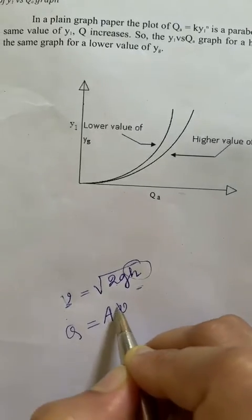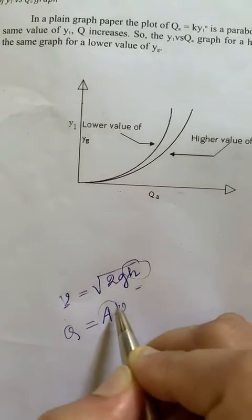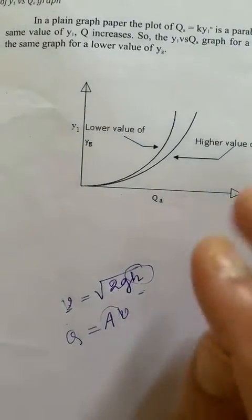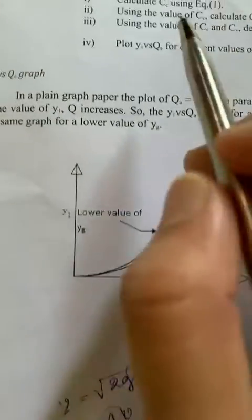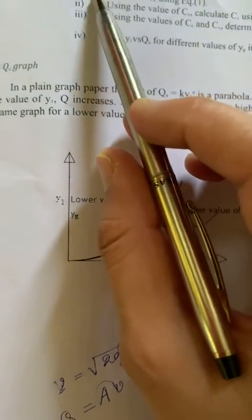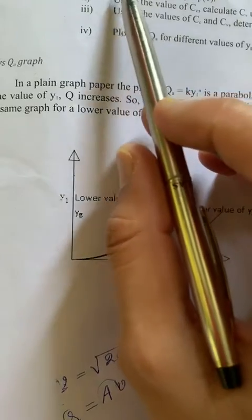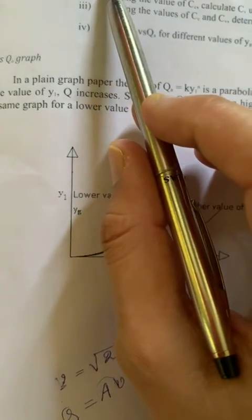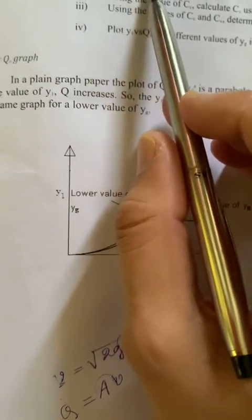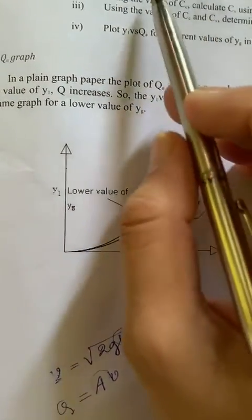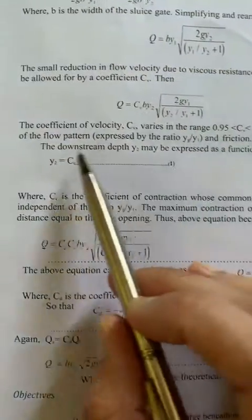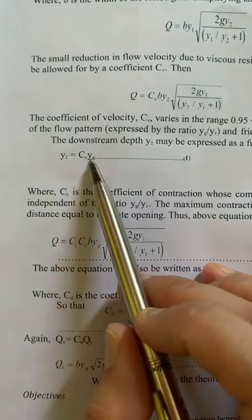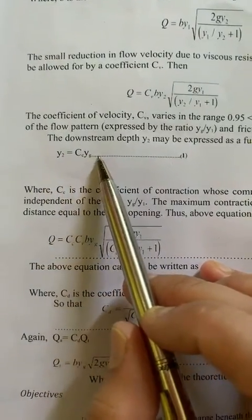We know a is the area and v is the velocity, and after that we will get q. Again, after determining the actual discharge, we have to find out cv, cc, and cd. To calculate cc, we have to use equation 1: y2 equal to cc·yz.